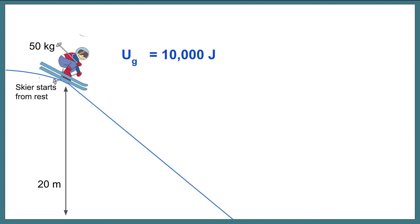I'm going to use a pie, a little circle here, to represent the types of energy that we see here. At the top, because the skier's at rest, all of the energy is in the form of gravitational potential.